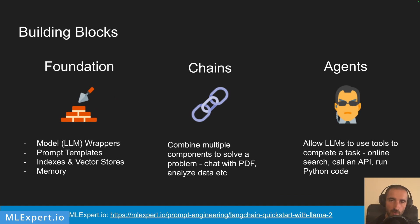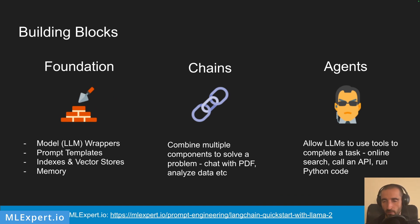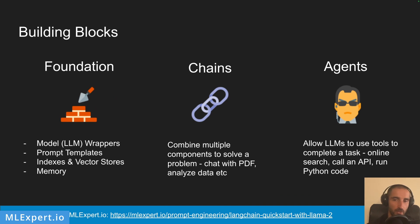The final building block are the agents. Agents are essentially more powerful chains that allow you to do actions based on tools you provide them. Some commonly used tools include online search, where you give your large language model the ability to search online for information. You can also pass in a code interpreter, which allows the large language model to run code against a Python interpreter, and you can call external APIs to get data — so you can build very powerful applications using these tools.